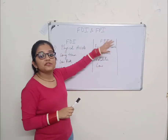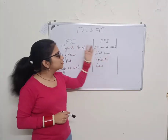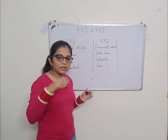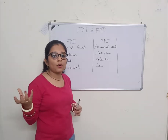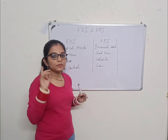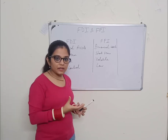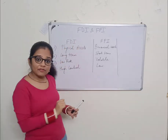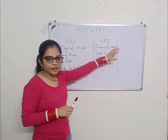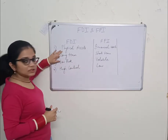So basically, FPI involves financial assets — that is the major difference between FDI and FPI. India gets money and the foreign investor gets a stake or control of the company. So if I am from the US and I want to acquire a company in India, that is an example of FDI. But if I just want to buy shares of that company, then that becomes an example of FPI.